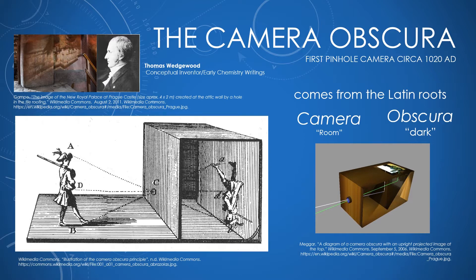This is a natural phenomena they probably accidentally discovered. There's an example of this happening in Prague, created just from a pinhole in a tile in the ceiling. The man to the right of that image is Thomas Wedgwood, who is credited as the conceptual inventor of photography using the camera obscura. He saw the potential, and though he never successfully created a photographic image, his early writings on chemistry definitely influenced all the people who made those discoveries later on.